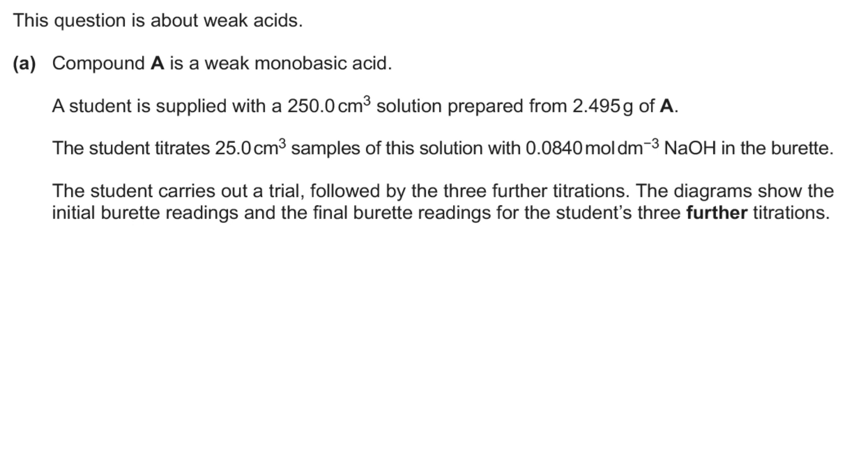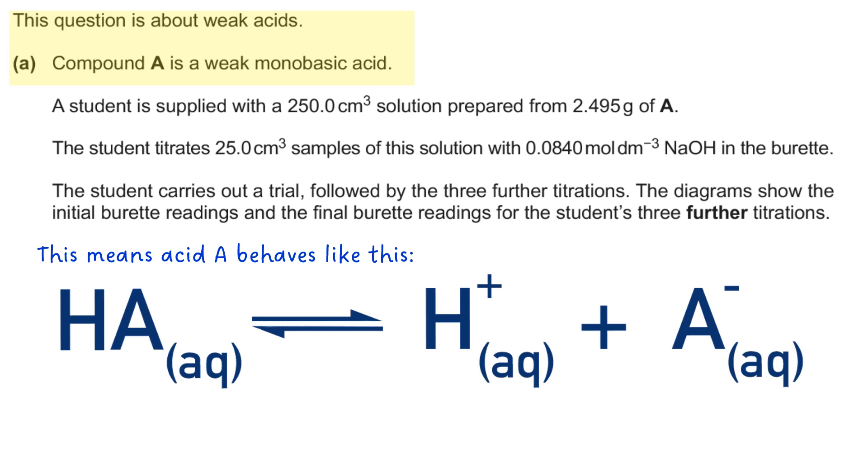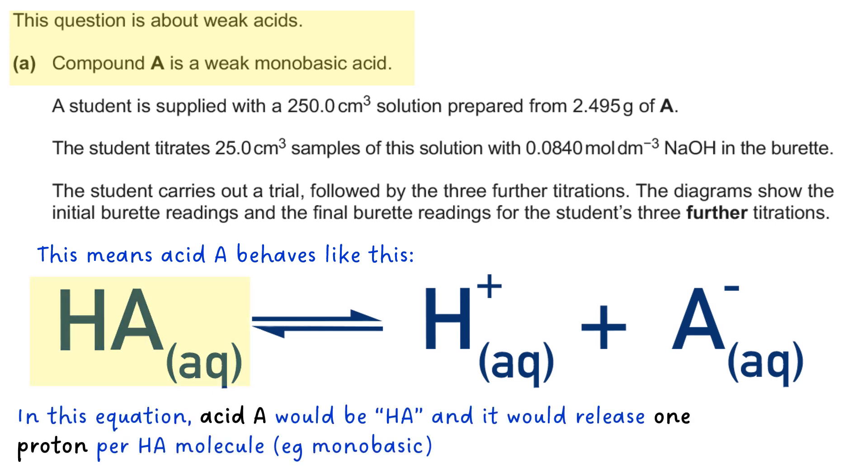So I'll take it a section at a time. First bit, it says the question is about weak acids and compound A is a weak monobasic acid. So it's worth taking a moment to think about what that means. It means you get one hydrogen ion coming off. So in this equation we're going to use HA to represent acid A. HA is a common way of representing a generic weak acid. You can see that one hydrogen ion comes off per HA molecule. So it's worth bearing that in mind for later on in the question.